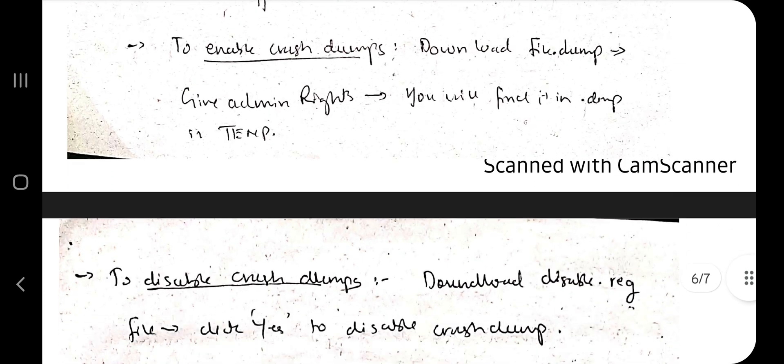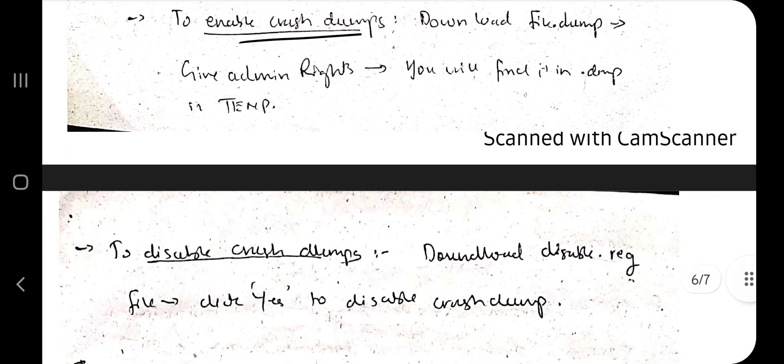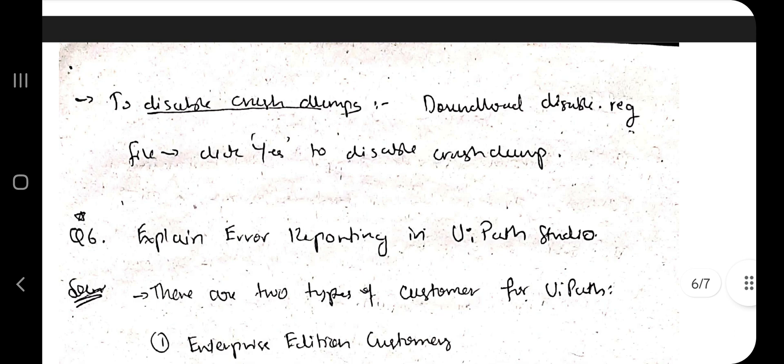You can enable or disable by using the following things. If you want to enable the crash dumps, you can download a file, give the admin rights, and the dump will be found in the .dmp file in the temp folder. If you want to disable it, in similar way you have to download a disable .reg file, click yes on the administrator settings, and then you will be able to disable the crash dumps.